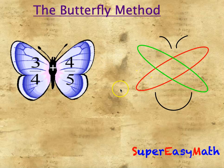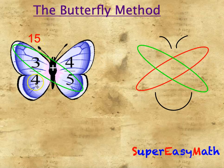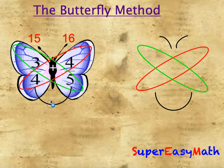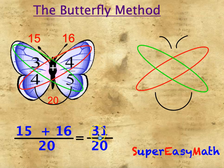This method is about multiplying those two wings. So 5 times 3 equals 15, we will write 15 here. And the second wing: 4 multiplied by 4 equals 16. And the denominator will be 4 multiplied by 5, which is 20. So this fraction will be equal to 15 plus 16 divided by 20, which is 31 over 20.